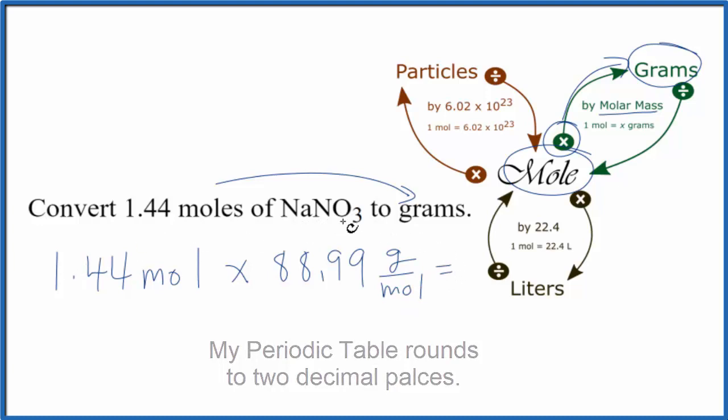When we multiply, we have moles on top and on the bottom. They're going to cancel out. We'll be left with grams. And that's how we know we're right, because we're looking for grams.